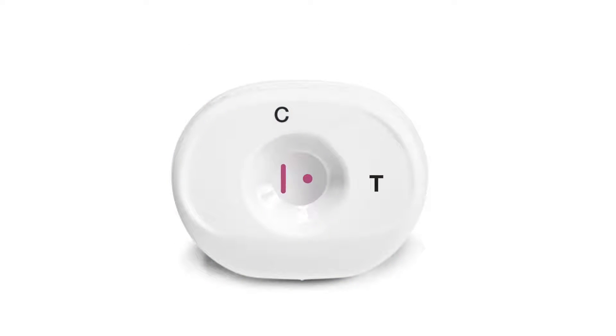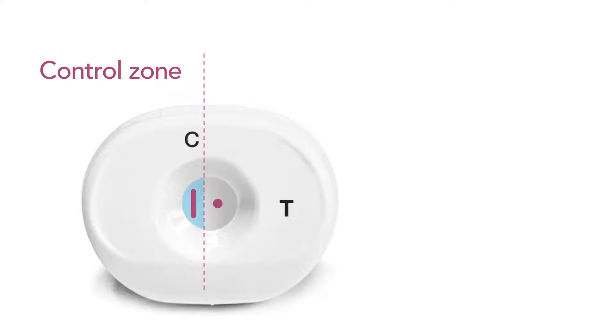A successful test is shown. The control line appears on the test membrane under the letter C to show that all test components are working and that the test has been performed correctly.